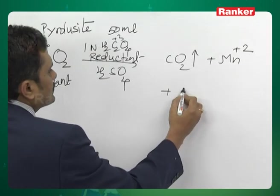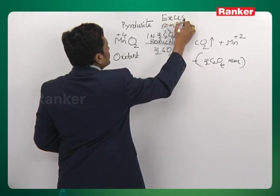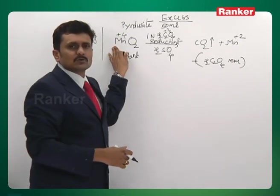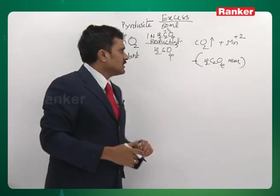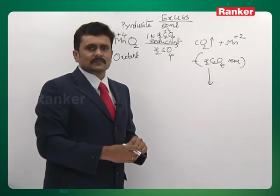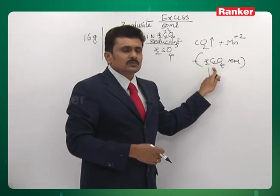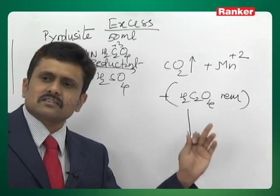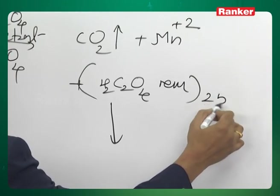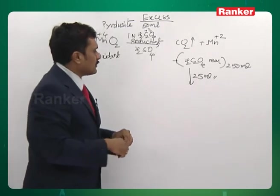Some oxalic acid is left undecomposed, meaning we have taken an excess amount of oxalic acid. MnO₂ is acting as the limiting reagent. The excess oxalic acid remaining in solution is found by back titration — when the substance added in the first reaction remains and you titrate it again, it is called back titration. The solution was made up to 250 ml, and 25 ml of the remaining oxalic acid was back titrated.